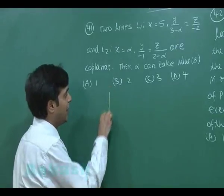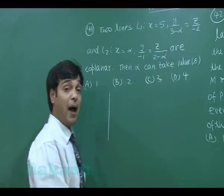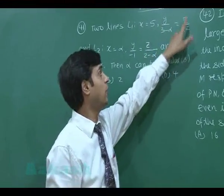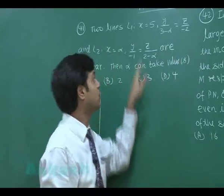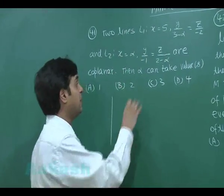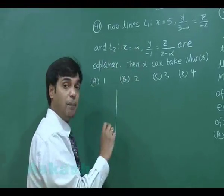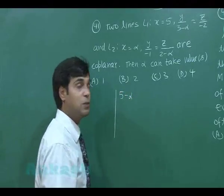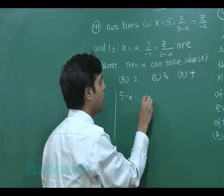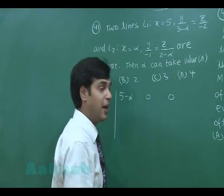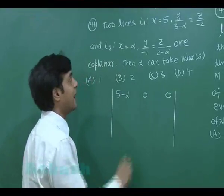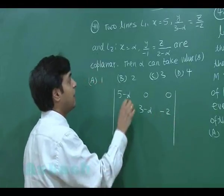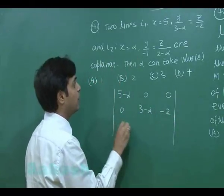First line: (x-5)/0 = y/(3-α) = z/(-2). Second line: (x-α)/0, we can write as (5-α) for the first point, then 0-0, similarly 0 as the third point.